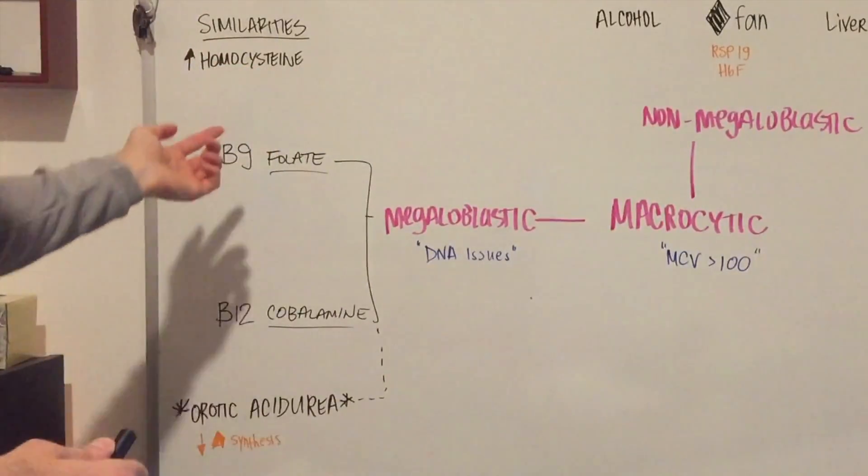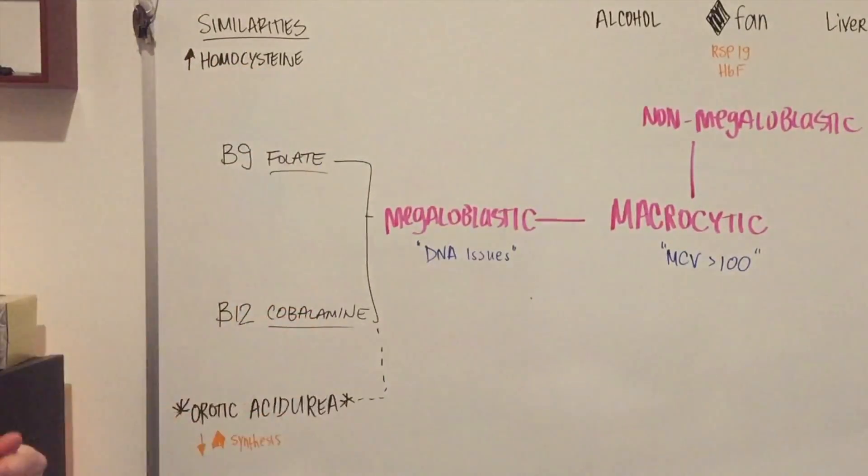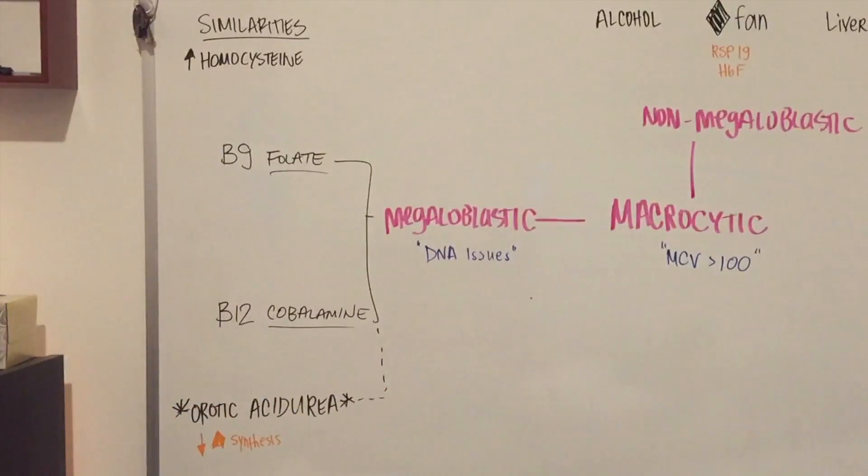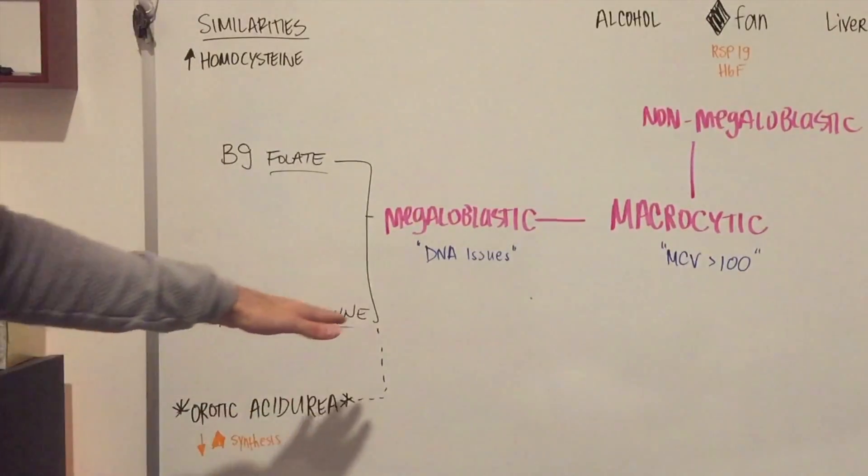This does not help you differentiate between B9 or B12, unfortunately. But if the presentation of the patient does mention that there is going to be peripheral neuropathy, decreased ability to sense, difficulties walking, then you're going to want to think to B12.